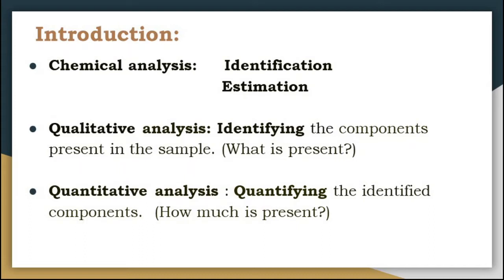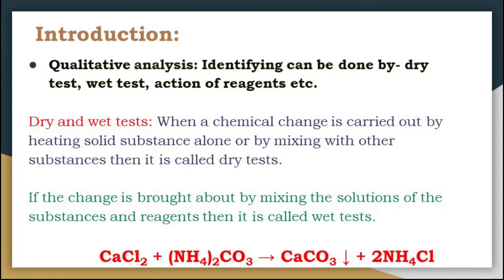Qualitative analysis usually precedes quantitative analysis, as the contents of the substance have to be identified first, and then only they can be estimated. In qualitative analysis, identification of substances is carried out by using various tests like dry test, wet test, action of reagents, etc.